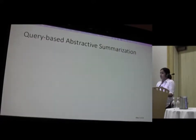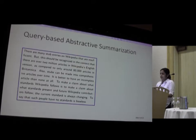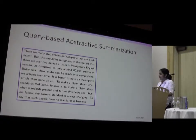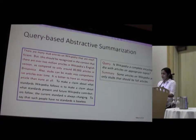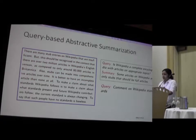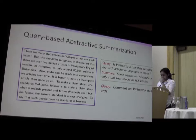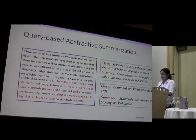So what is query based abstractive summarization? Let's say we have been given a document. If I ask you to summarize it, you will cover all the salient points and try to generate a summary. But if I give you a context and ask you to summarize based on that context, the summary should focus more on the relevant part of the document. If the query changes, then your summary will also change based on the query.